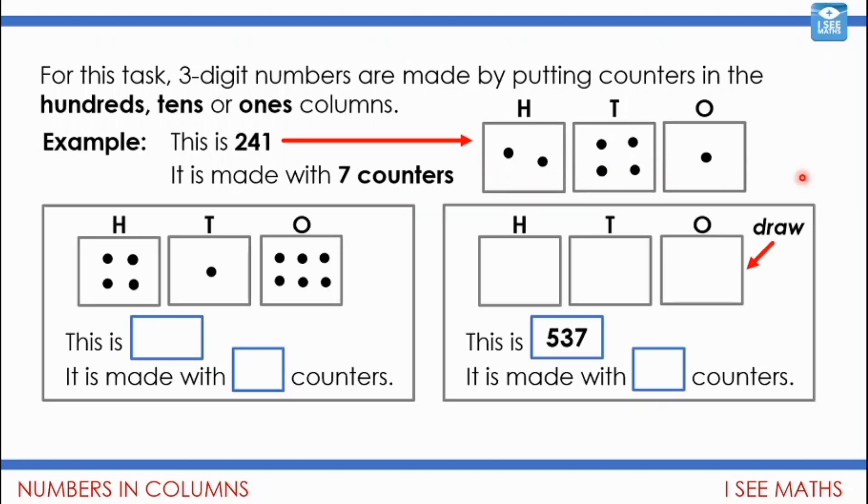Now, I know you won't exactly be able to draw them on, but see if you can imagine the drawing here and fill this in. So for this number, what is the number and how many counters is it made with? And so here, I'm going to draw on 537. What's that going to look like? Can you show that? And how many counters is that made with? Pause the video and have a go.